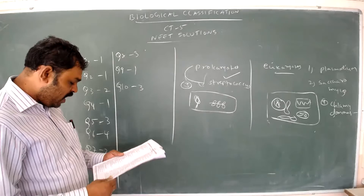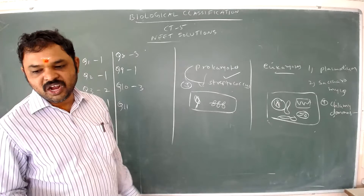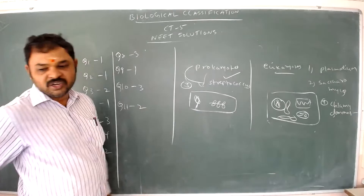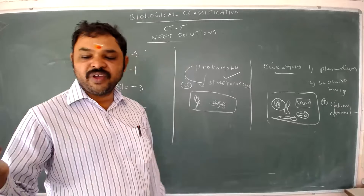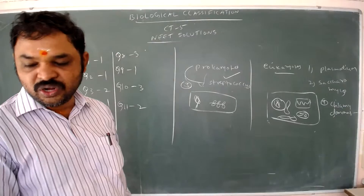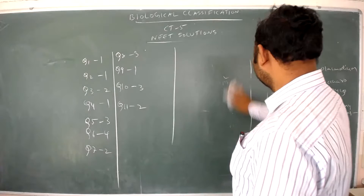Question number eleven: single-cell eukaryotes are included in which kingdom? Single-cell prokaryotes belong to Monera, while single-cell eukaryotes belong to Protista. Protista includes chrysophytes, dinoflagellates, euglenoids, slime molds, and protozoans. Monera includes bacteria, archaebacteria, cyanobacteria, and mycoplasma. The answer to question eleven is option 2: Protista.